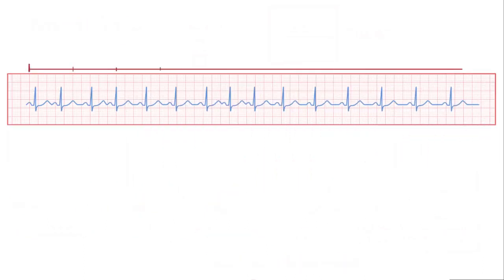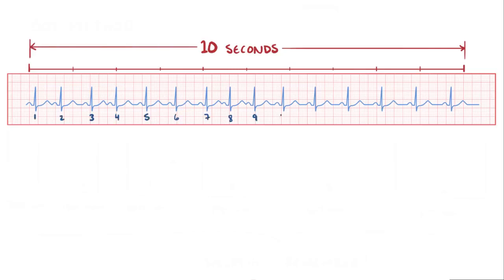Another method to figure out the heart rate is to count the number of beats in 10 seconds, which is the standard length of time in the rhythm strip portion of a 12-lead ECG. So, in this case, we can count 15. Since this is a 10-second interval, all you have to do is multiply this by 6 to get the heart rate, which would be 90 beats per minute.